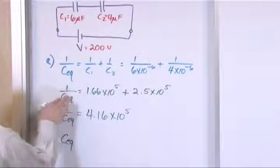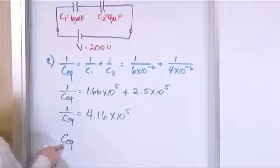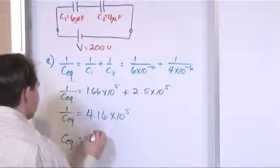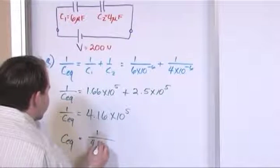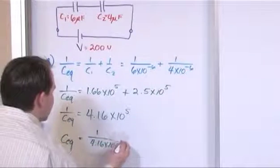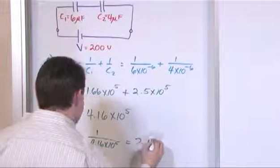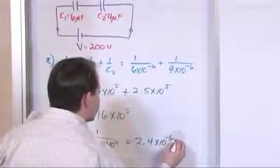Because we do 1 divided by this, that's going to make equivalent capacitance pop up by itself. On the right-hand side, we have to say 1 over this. So we'll say 1 over 4.16×10^5, which is equal to 2.4×10^-6 farads.